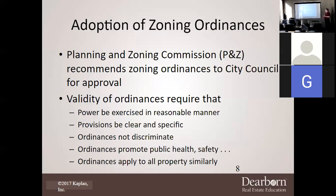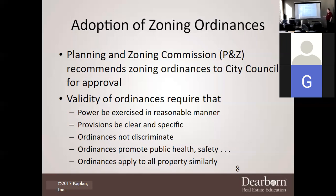There are adoptions for zoning and planning through the Planning and Zoning Commission, which makes recommendations for zoning ordinances to the city council. The commission meets and makes recommendations, and city council gives the green light or red light. Regarding validity of ordinances, powers must be exercised in a reasonable manner, provisions must be clear and specific, ordinances can never discriminate, must promote public health and safety, and must apply to all properties similarly.